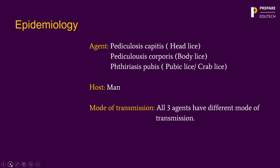What is the epidemiology of pediculosis? Agent factors. There are three agents causing pediculosis: pediculosis capitis, pediculosis corporis, and phthirus pubis. Pediculosis capitis is associated with head lice, pediculosis corporis with body lice, and phthirus pubis with pubic lice or crab lice.